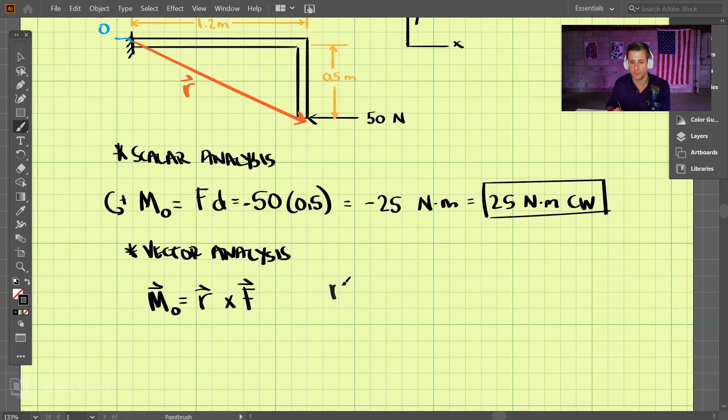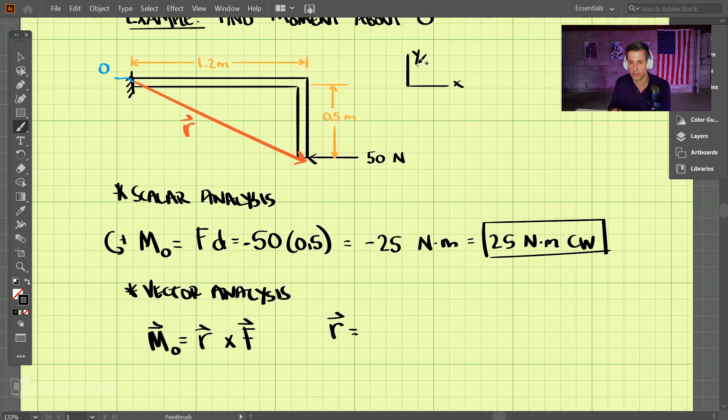So R equals, looking at our X-Y axis here, in the X direction it would be 1.2, so we have 1.2i, and in the Y direction we have negative 0.5j.